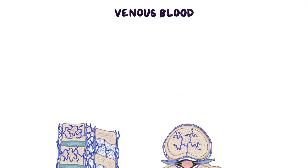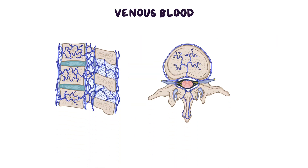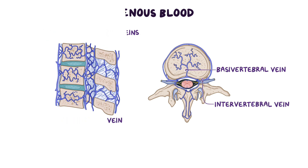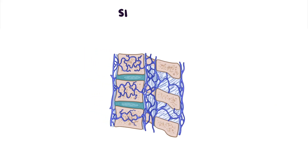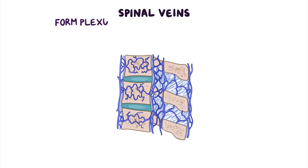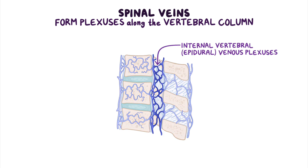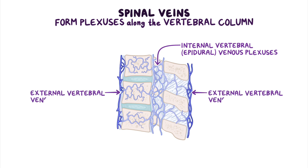Venous blood drains from the vertebral column through spinal, basal vertebral, and intervertebral veins. Let's start with the spinal veins, which form plexuses along the vertebral column. These plexuses include the internal vertebral or epidural venous plexuses, which lie inside the vertebral canal, or the external vertebral venous plexuses outside the vertebral canal.